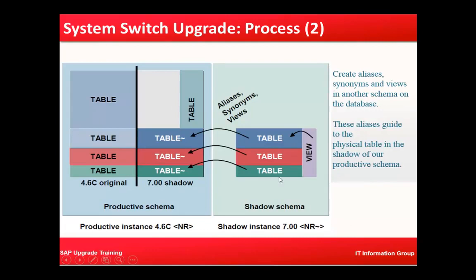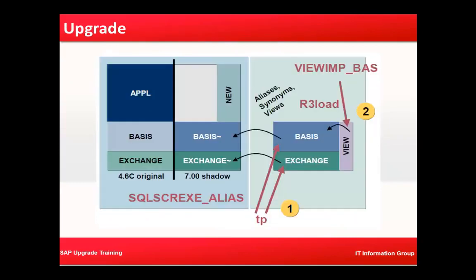Going back to the previous slide, you can see how these things are structured. Here you have your 4.6c tables of the productive system, and these are the new tables which have been added. For the existing tables, either an alias, synonym, or view is created using the tilde naming convention, so you can identify them as referring to shadow instance tables.